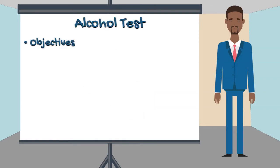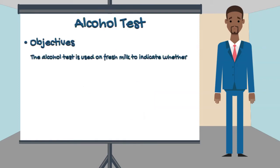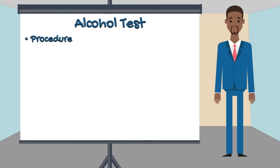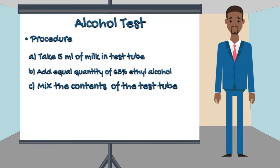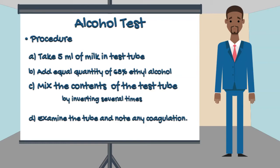The objective of the Alcohol test is to indicate whether fresh milk will coagulate on thermal processing or not. Procedure: Take 5 ml of milk in a test tube, add an equal quantity of 68% ethanol, mix the contents by inverting several times, then examine the tube and note any coagulation.